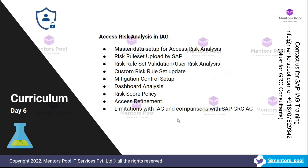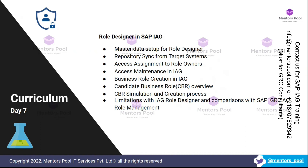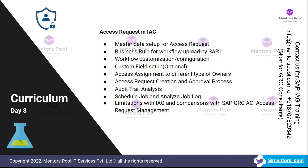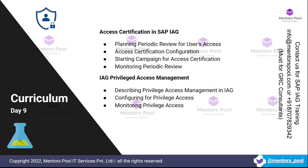After this, we'll start with the core functionalities and capabilities of SAP IAG, or any risk and governance system, which includes access risk analysis, rule designer, access request, access certification, and IAG privileged access management.